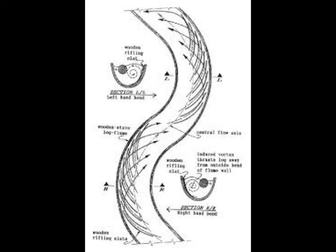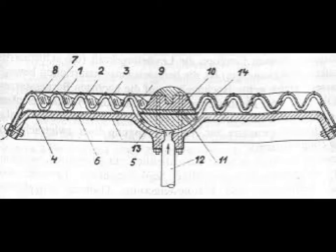Victor Schauberger, known as the water wizard of Austria, was a forest ranger who studied the flow and characteristics of water. He also invented a turbine in some ways very similar to the Tesla turbine. It consisted of two copper plates placed a small distance apart with circular ridges in them.